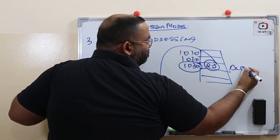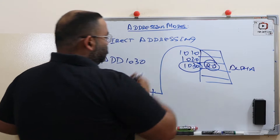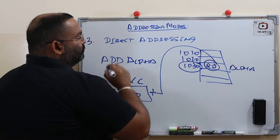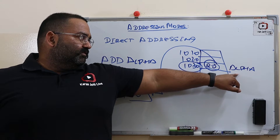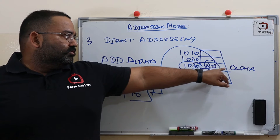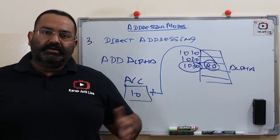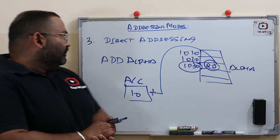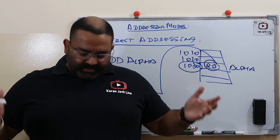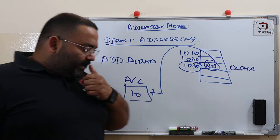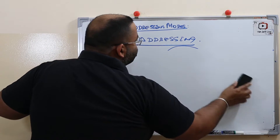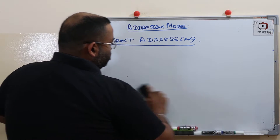We can also give a name to a memory address — for example, calling it 'alpha'. So we can write ADD alpha, meaning whatever contents are in the memory location named alpha (which is 1030, storing the value 20) get added to the accumulator. This is called direct addressing.